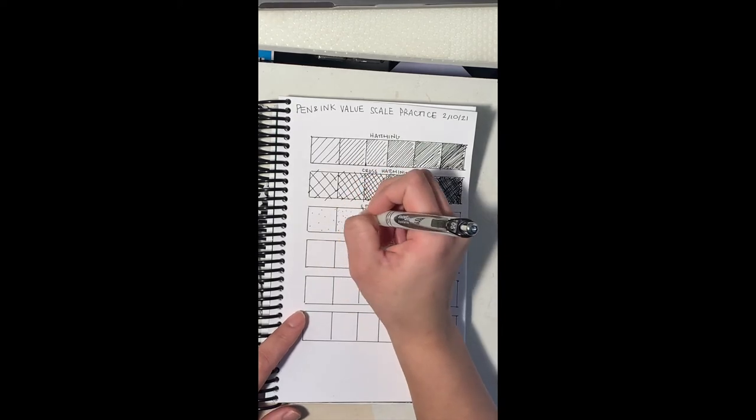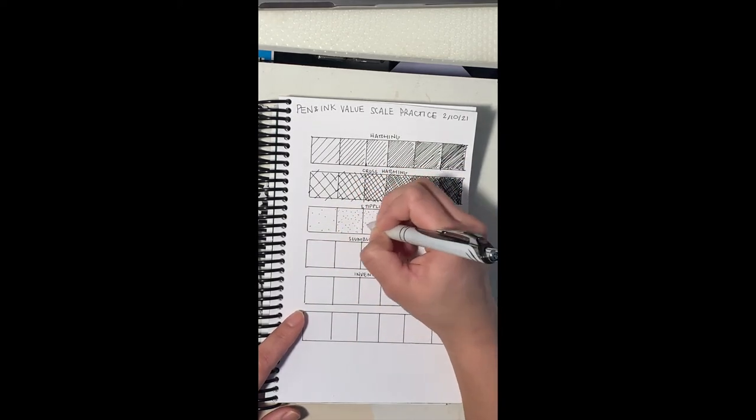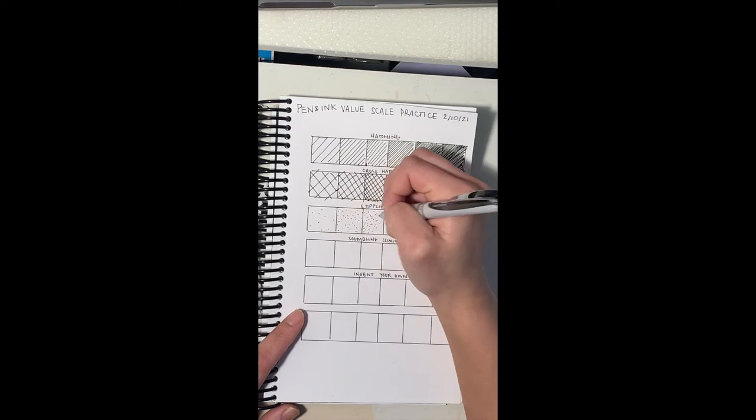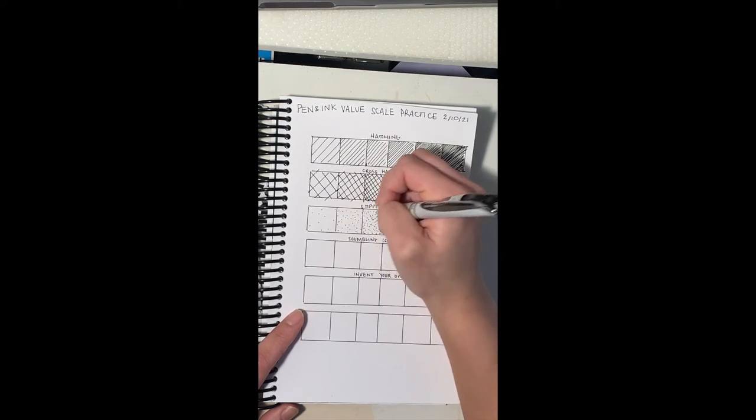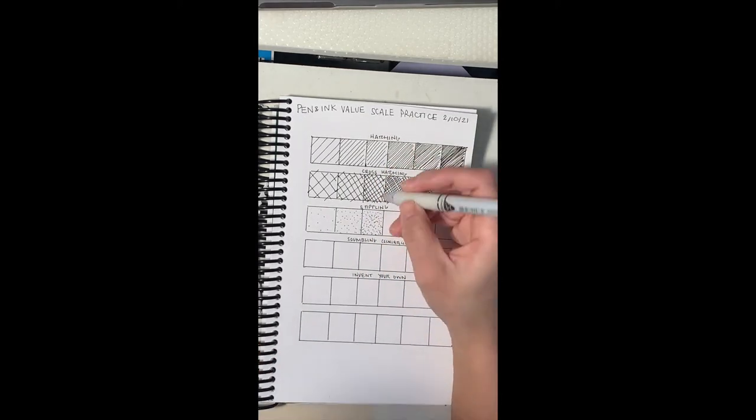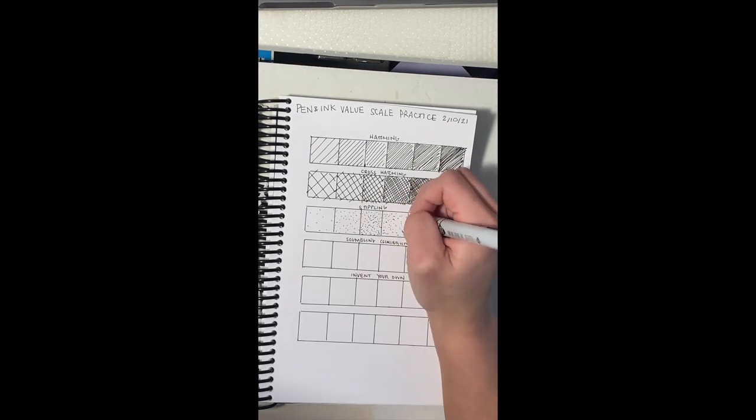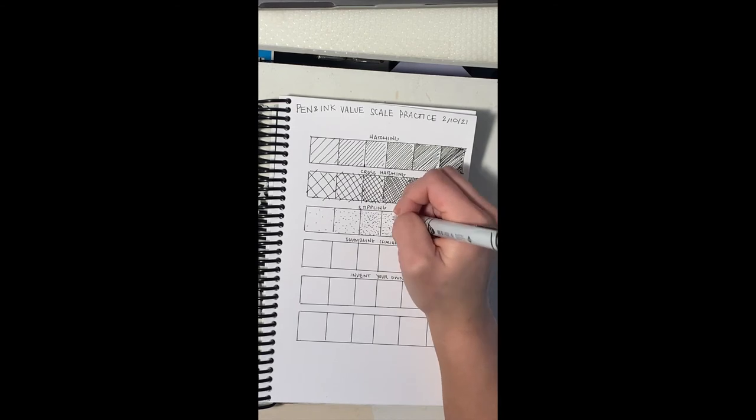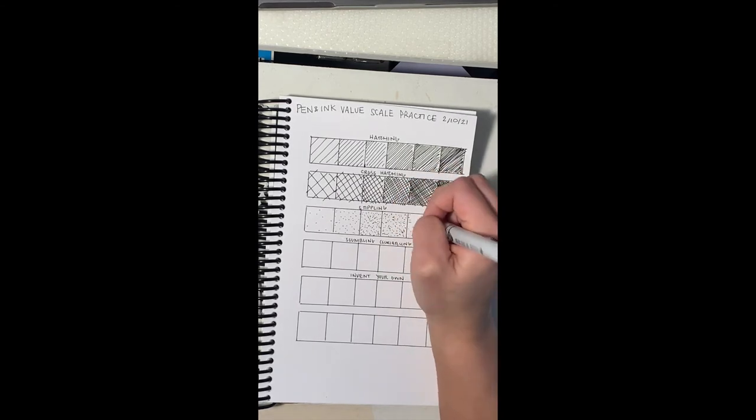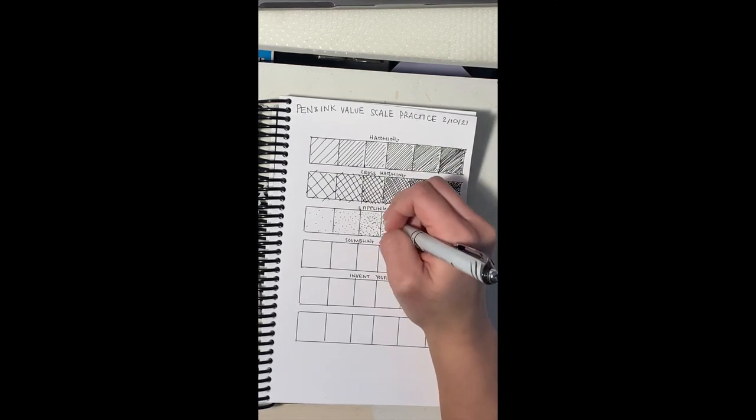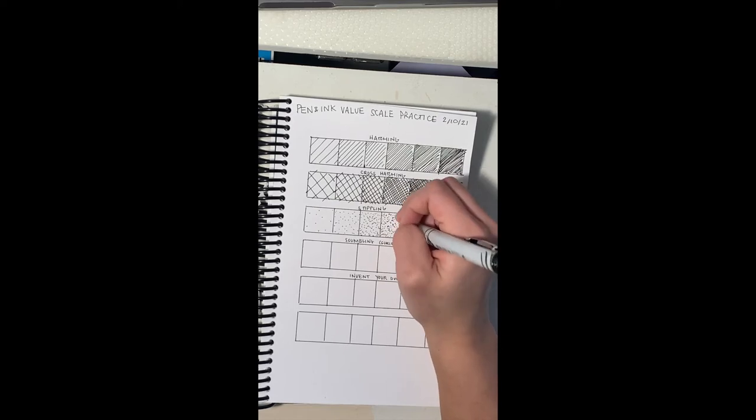Stippling is just creating little dots and you add more and more. I sped this one up too because it takes a long time. And you want to have individual dots. You don't want to have little tadpole streaks. That means you're not picking up your pen enough. It's easy to get a little bit lazy with stippling.